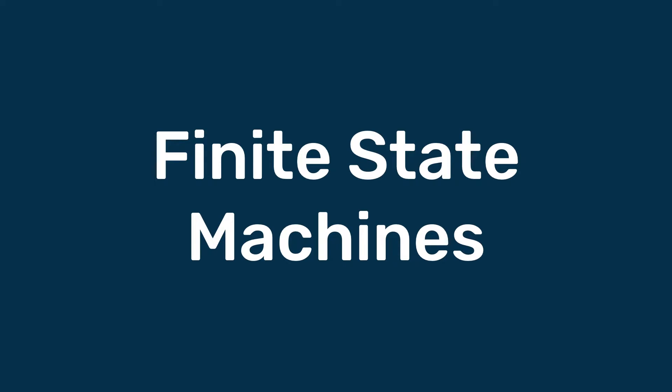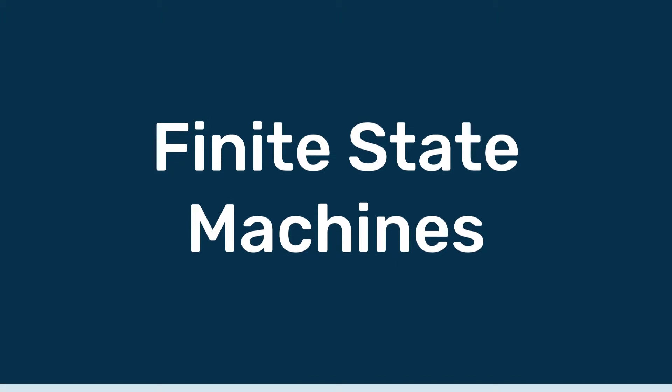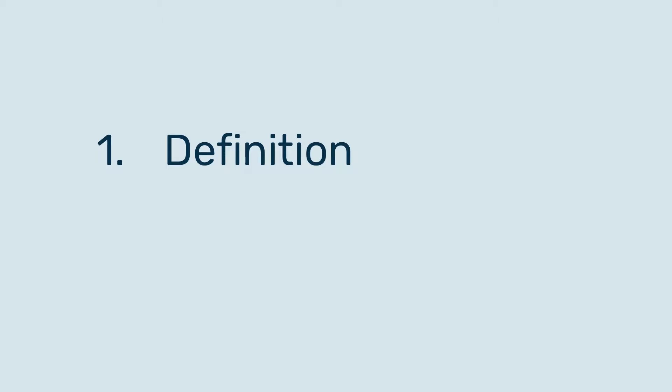How's it going guys? It's Chris here and this video covers the AS topic of finite state machines. Traffic lights are an example of an FSM. By the end of the video you should be able to understand why. Here's the agenda.